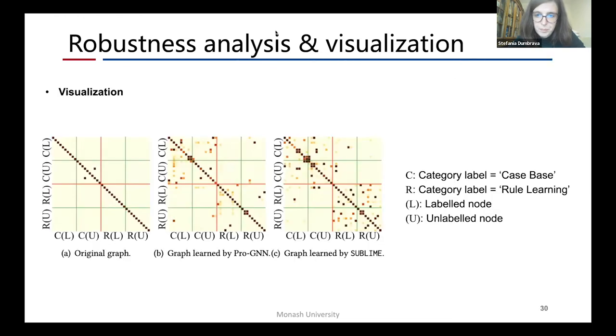We also visualize the original structure and the learned structure by ProGNN and our method for comparison. We find that our method can learn some connections between intraclass nodes, while the interclass connections are rarely learned. Compared to the supervised baseline ProGNN, our method can learn balanced connections between labeled and unlabeled nodes, which show that our method successfully avoids edge distribution bias.